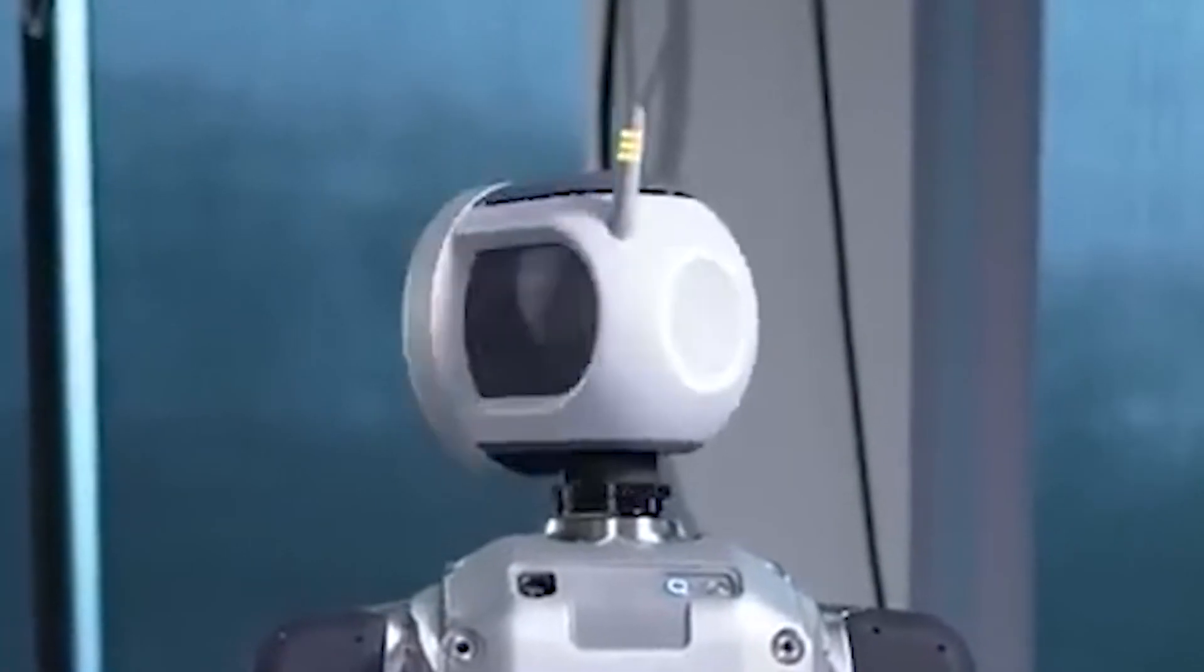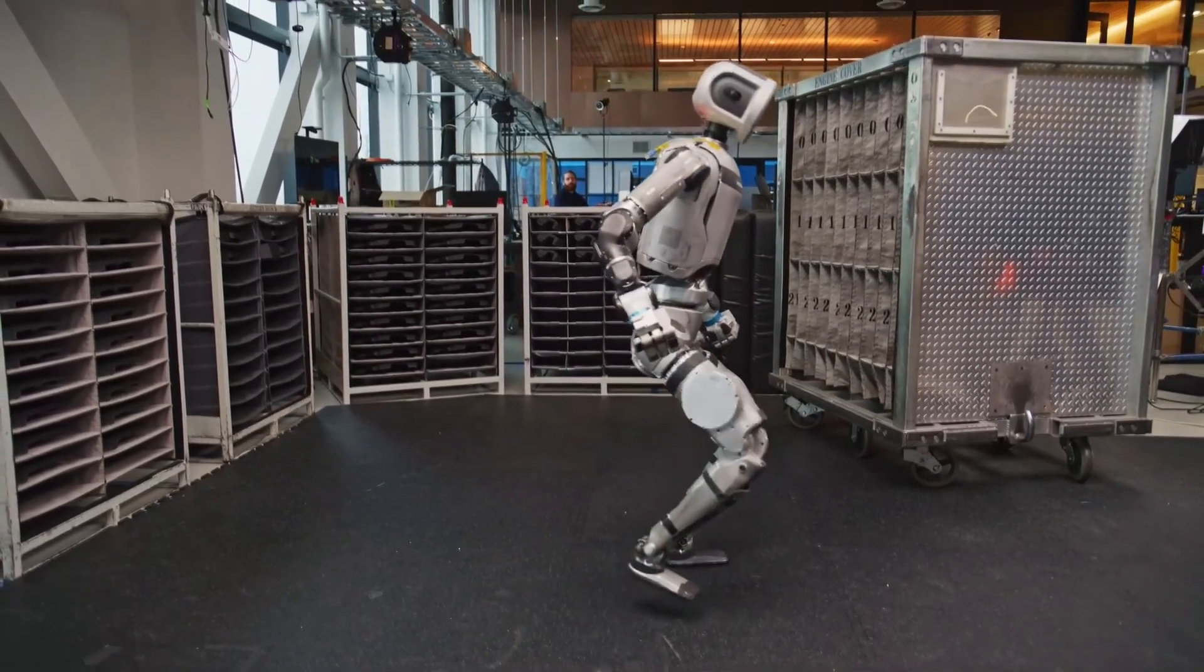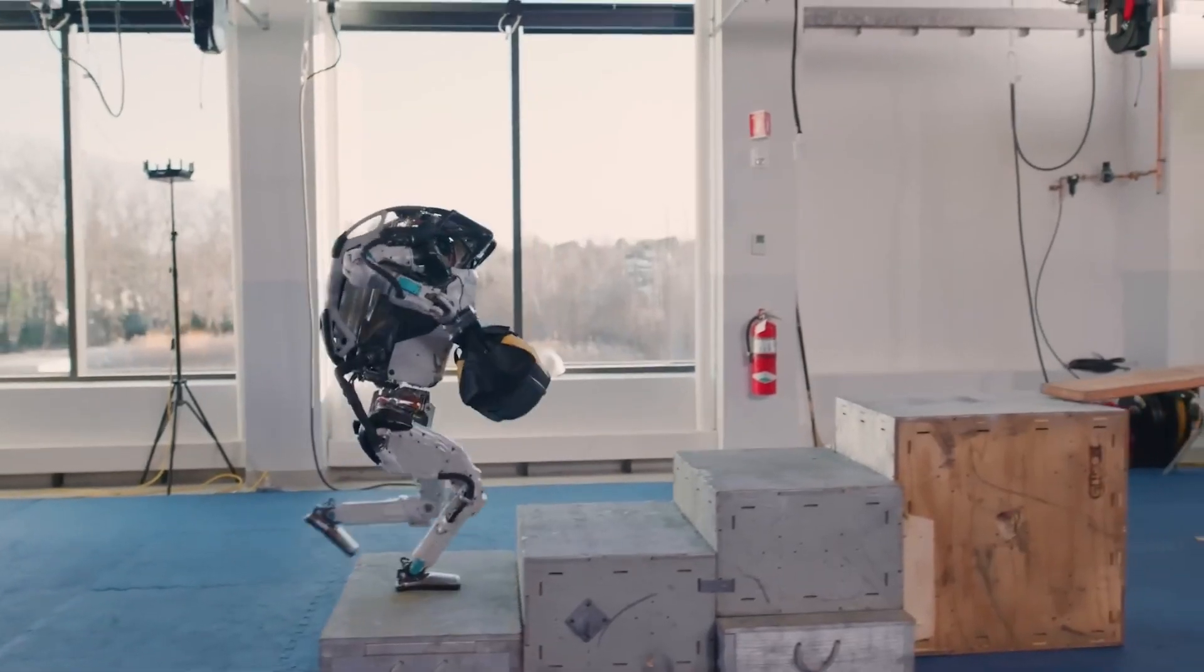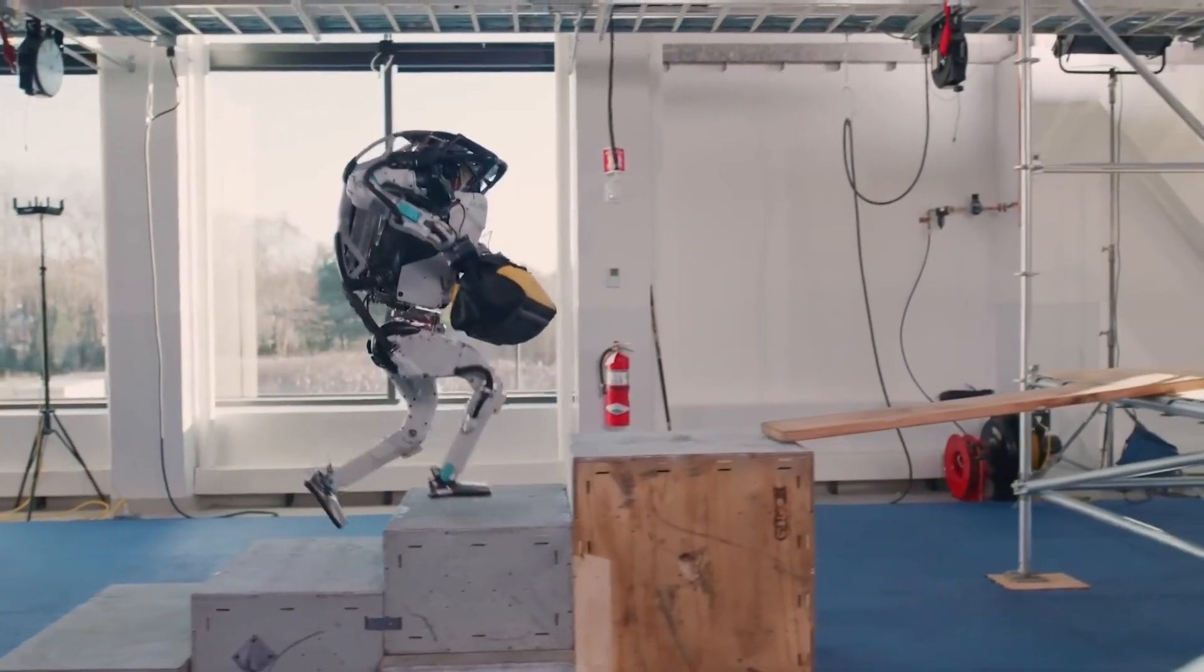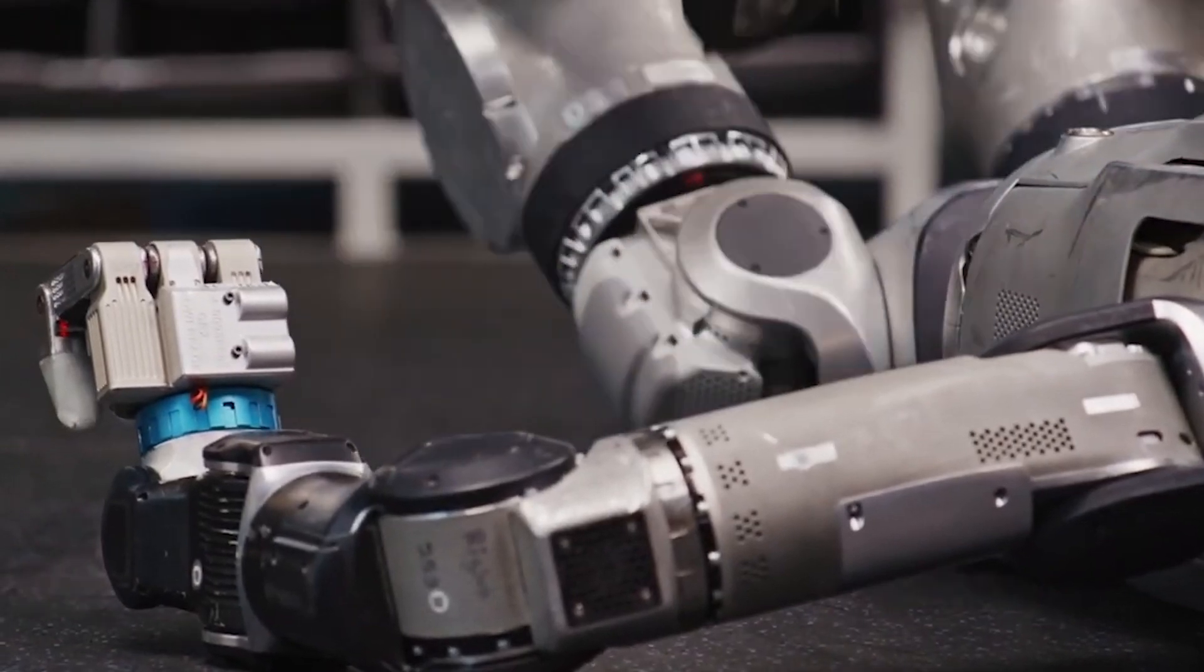Atlas 360-degree spins might seem like just for show, but they're actually an essential part of its movement strategy. Unlike traditional robots that need multiple steps to reposition, Atlas can pivot instantly thanks to its fully rotatable joints.